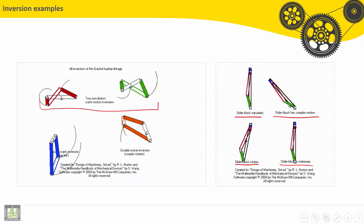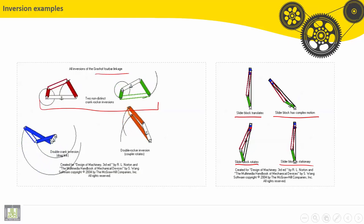It is called a Grashof four bar linkage. We will see in the next lecture what is Grashof four bar linkage.